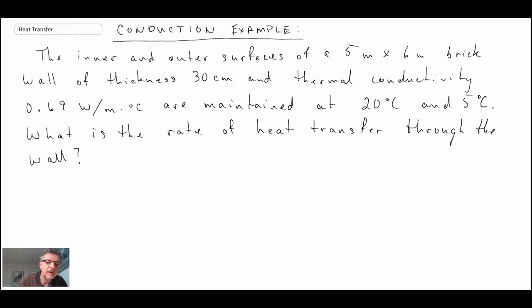So there's our problem statement. We're given a brick wall and we're told that one side of it is at 20 degrees C, the other side is at 5 degrees C, it's 30 centimeters or 12 inches thick. Now we're given the thermal conductivity and we're asked to solve for the rate of heat transfer going through that wall.